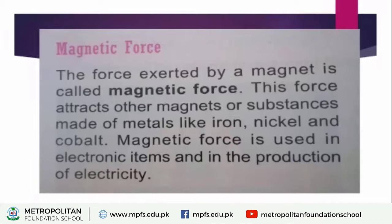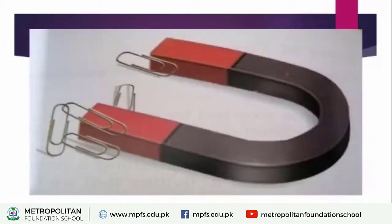Number four — magnetic force. The force exerted by a magnet is called magnetic force. This force attracts other magnets or substances made of metal like iron, nickel and cobalt. Objects and substances made of iron, nickel and cobalt are attracted by a magnet. Magnetic force is used in electronic items and in the production of electricity. Here you can see a magnet attracting pins — things made of iron and nickel. Normally, magnetic force is used in electronic items.